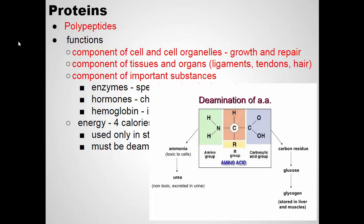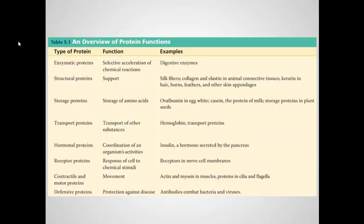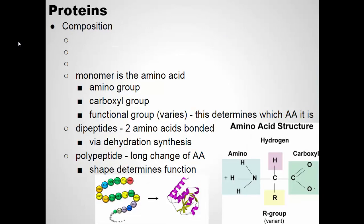We're going to talk about an amino acid in a minute. One of the main components is the amino group — that's where the nitrogen is, and that has to be detoxified in order to be excreted. Proteins do lots of different things: they make up enzymes, they make the structure of living things, they store things, and they help with transport and communication.